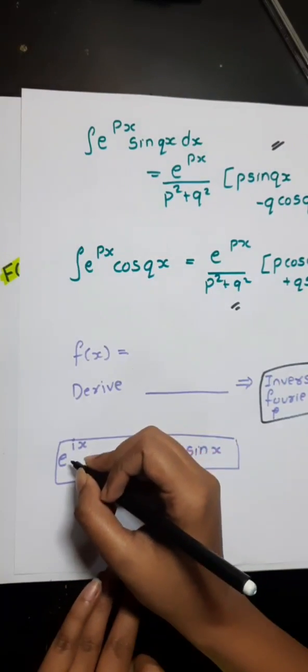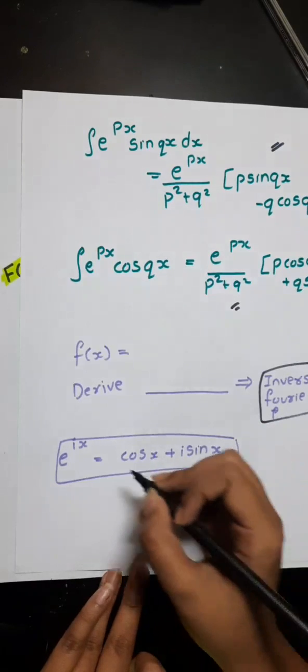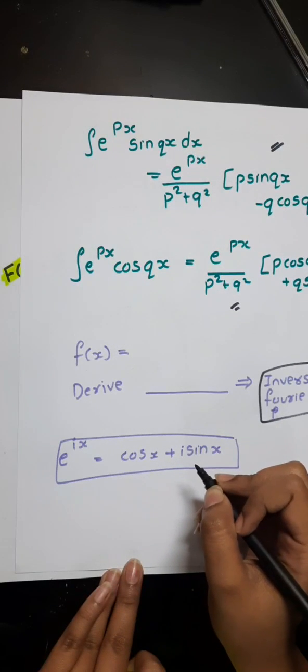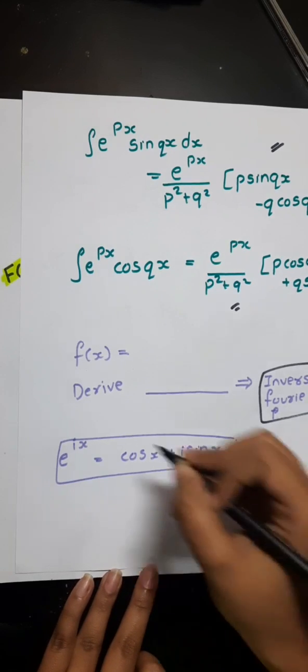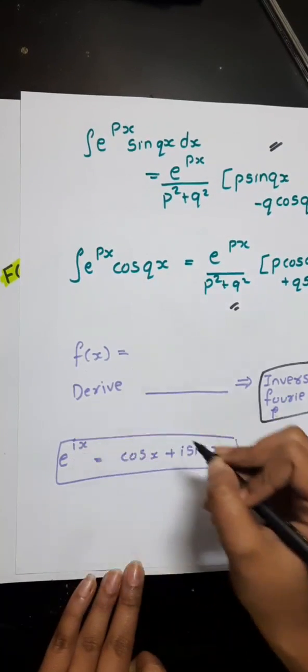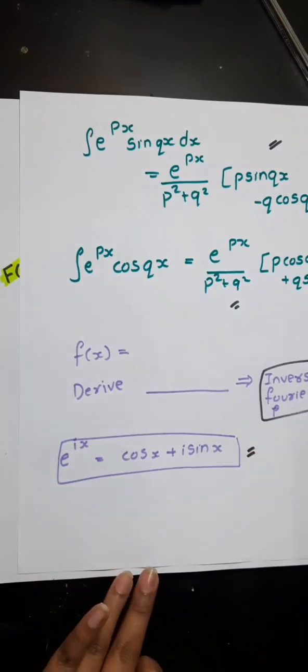This is the Euler form, e raised to power iota x, which is equal to cos x plus iota sine x. This you would be using while solving the integration. If you can't solve it in this form, just use this form, it would be more easy to integrate with this.